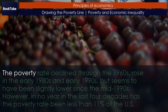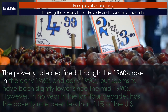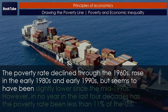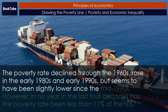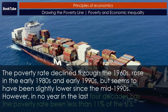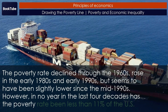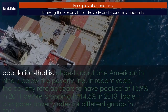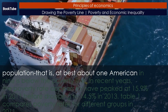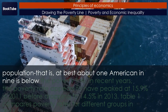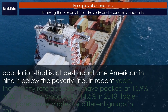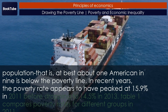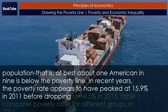The poverty rate declined through the 1960s, rose in the early 1980s and early 1990s, but seems to have been slightly lower since the mid-1990s. However, in no year in the last four decades has the poverty rate been less than 11% of the U.S. population — at best about one American in nine is below the poverty line. In recent years, the poverty rate appears to have peaked at 15.9% in 2011 before dropping to 14.5% in 2013.